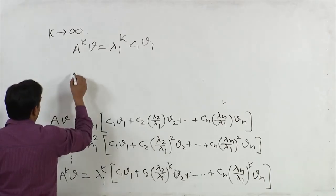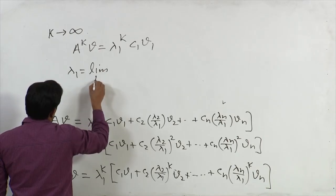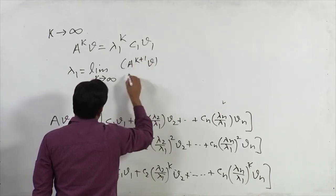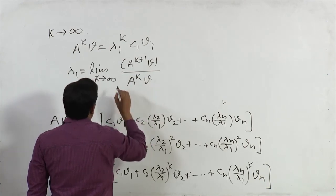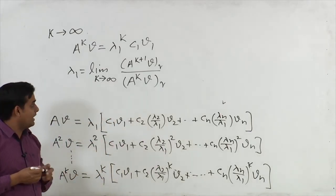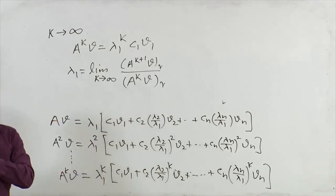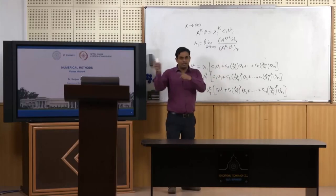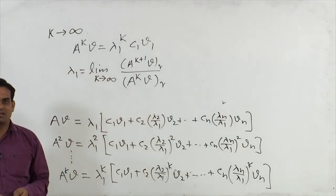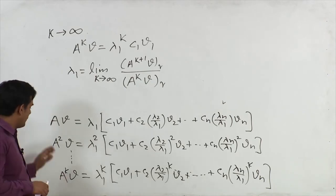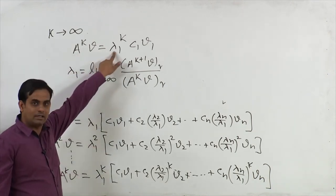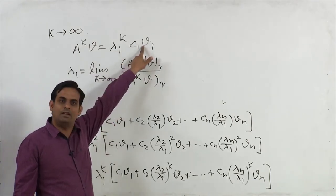This means we can find lambda 1 as the limit as k tends to infinity of the ratio of the r-th component of successive iteration vectors, where r is the component with the highest magnitude. This gives us the dominant eigenvalue, and since we use successive powers of A, this is called the power method. The corresponding eigenvector converges to v1.